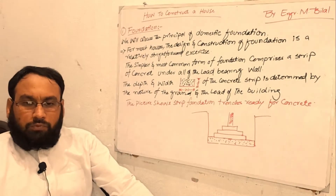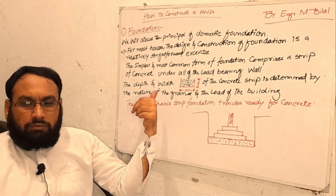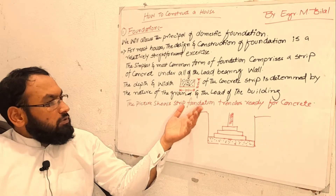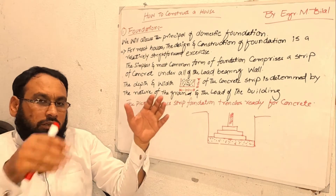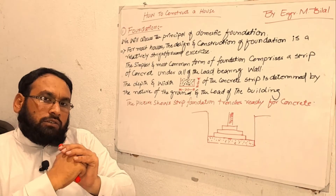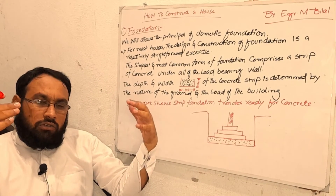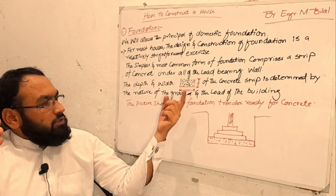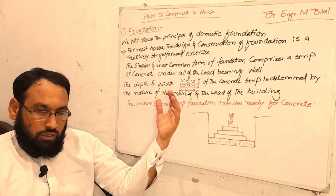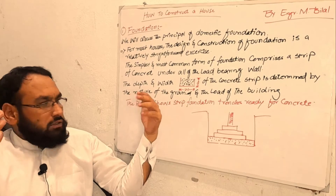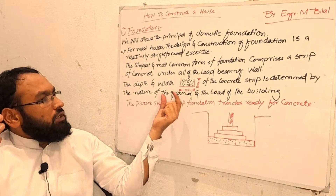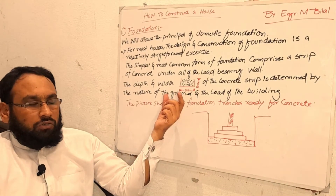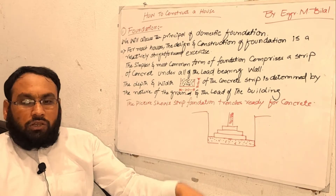On the load bearing walls, the depth and the width of the concrete strip is determined by the nature of the ground. If the ground soil is cohesive and the soil is hard strata, we can reduce the thickness — meaning the depth and the width of the foundation can be reduced. But if the soil is clay or non-cohesive soil, we can increase the depth of the foundation of the concrete strip as well as the width of the concrete strip.